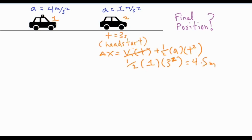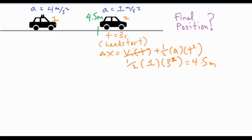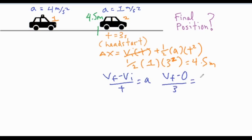So car two is 4.5 meters ahead. Next we figure out how fast it's going. Plugging into the formula vf = vi + at, we have vf − 0 = 1 × 3 seconds, with acceleration of 1. Multiply both sides by three and vf equals 3 meters per second.